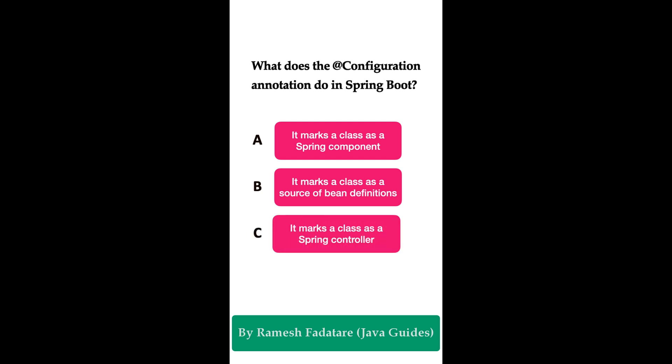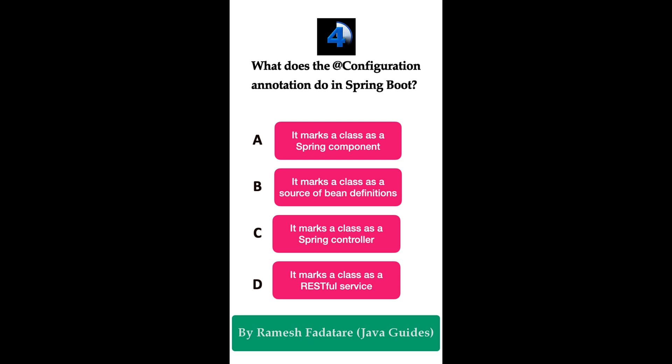What does the @Configuration annotation do in Spring Boot? Option A: marks a class as a Spring component. Option B: marks a class as a source of bean definitions. Option C: marks a class as a Spring controller. Option D: marks a class as a RESTful service. The correct answer is option B. The @Configuration annotation marks a class as a source of bean definitions. When we want to define Spring beans using the @Bean annotation, we create a class annotated with @Configuration, and within that class we define the beans using @Bean.